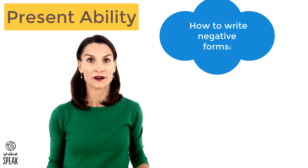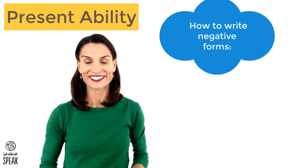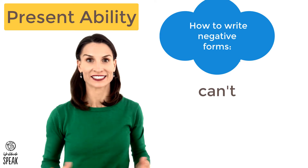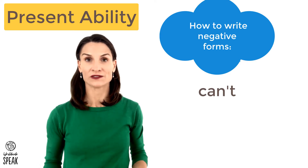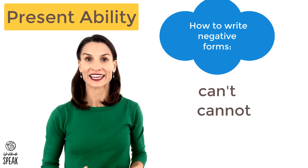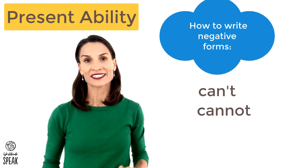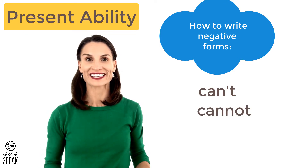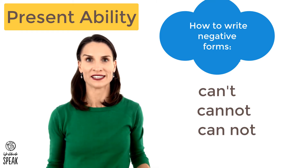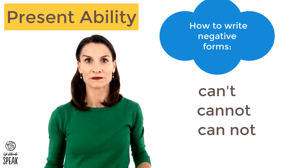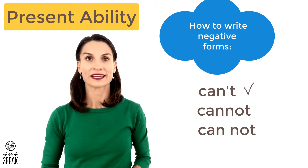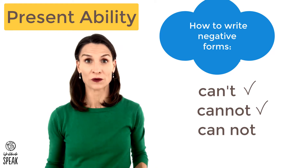A quick note about how to write the negative: you can write can't as a contraction, and this is very common. Or you can write it as cannot — one word. Technically you can also write it as two words, can not, but this is very uncommon today in English. Most of the time, people either use the contraction can't or cannot written as one word.